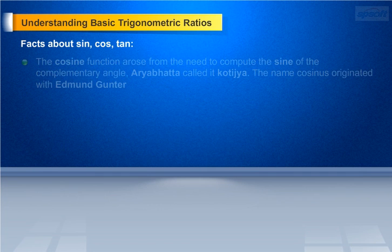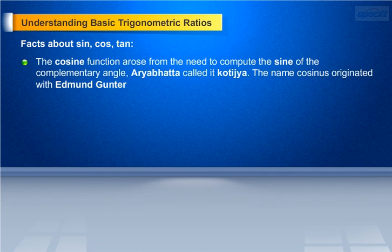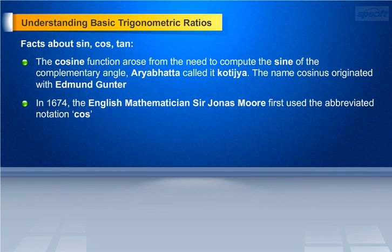The cosine function arose from the need to compute the sine of the complementary angle. Aryabhata called it Kattajaya. The name cosinus originated with Edmund Gunther. In 1674, the English mathematician Sir John Esmour first used the abbreviated notation cos.